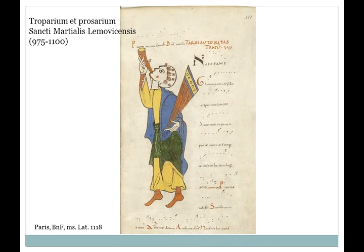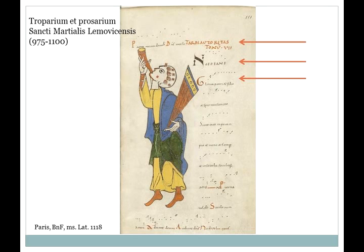Here we see a 10th century Aquitanian manuscript. Notice at the end of the top line the abbreviated labeling for tetrardus autentus, that is mode seven. Then we have the ending for that same mysterious set of syllables we saw in the transcription of the 12th century manuscript. This is followed by the Gloria Patri written out completely, thereby giving us the complete psalm formula. Finally we have the chant 'puer natus', a mode seven chant.